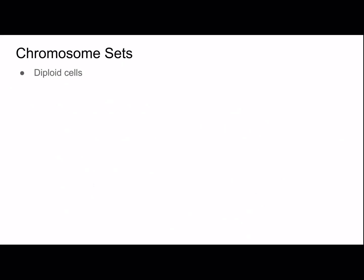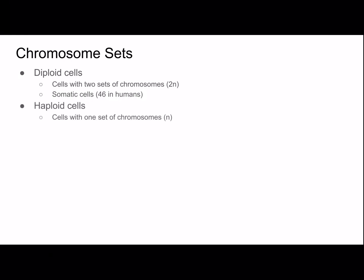Diploid cells are cells with two sets of chromosomes, 2N. Somatic cells are diploid and have 46 chromosomes in humans. Haploid cells are cells with one set of chromosomes, N. Gametes are haploid, and in humans that haploid number is 23 chromosomes. Each gamete has 22 autosomes and one sex chromosome.